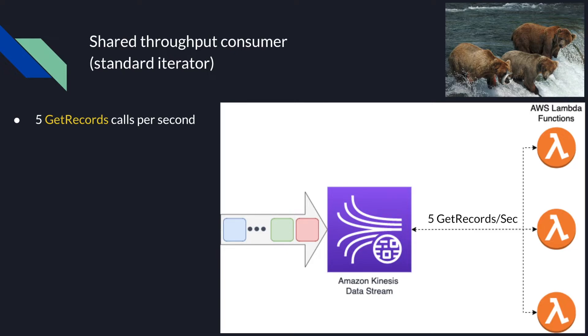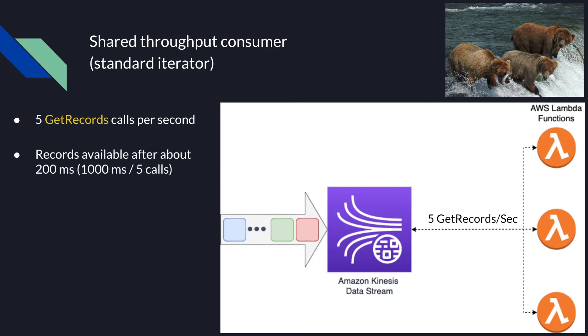The 5 GetRecords request limit also means that records can be read from the stream once every 200 ms, and the latency increases with each additional consumer that shares the throughput.